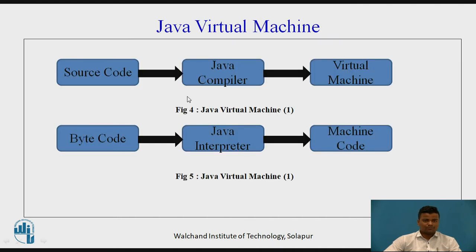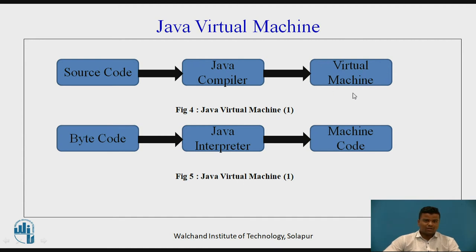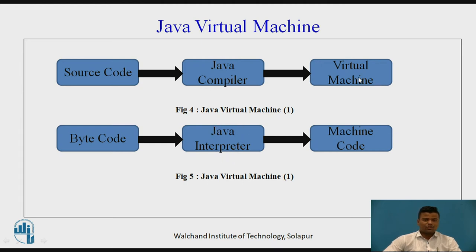Java Virtual Machine is similar to the combination of compilation and interpretation. First, the source code is converted into the class file (bytecode) with the help of the Java compiler. Then, the bytecode is converted into machine code (output) with the help of the Java interpreter. The virtual machine acts as an intermediate between the source code and the machine code output.